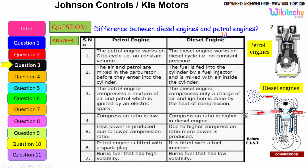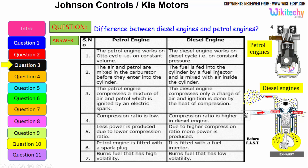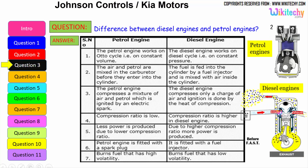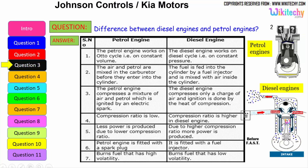Let's see the difference between the diesel engine and the petrol engine. The petrol engine works on the Otto cycle, therefore on constant volume, whereas the diesel engine works on the diesel cycle at constant pressure. The air and petrol are mixed in the carburetor before entering the cylinder, while in a diesel engine the fuel is fed into the cylinder by a fuel injector and mixed with air inside the cylinder. The petrol engine compresses a mixture of air and petrol which is ignited by an electrical spark, whereas the diesel engine compresses only a charge of air and ignition is done by the heat of compression.